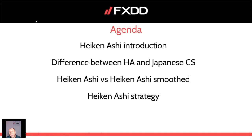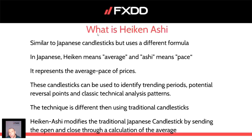So what are Heiken Ashi candlesticks? They're very similar to Japanese candlesticks but they use a different calculation formula. In Japanese, 'Heiken' means the average and 'Ashi' means pace, so when we translate it to English it should be something like 'the average pace of prices.' It's not just a literal translation — it's a real example of how Heiken Ashi candlesticks work.